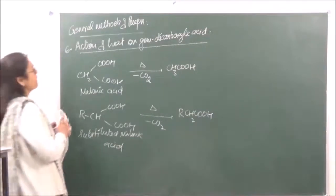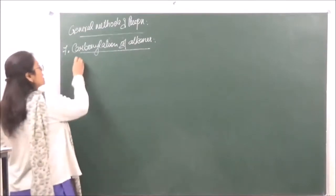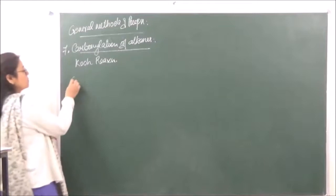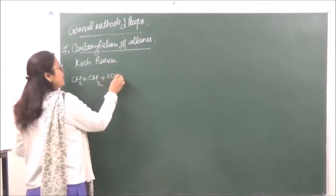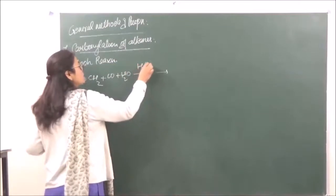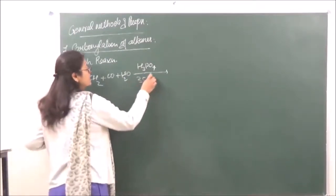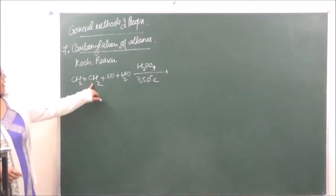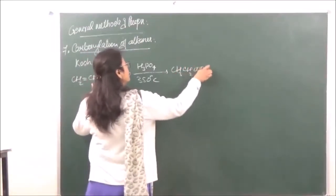The seventh method is carbonylation of alkenes, also known as the Koch reaction. An alkene is reacted with carbon monoxide and water in the presence of H₃PO₄ at approximately 350°C under pressure. The product is a carboxylic acid with a higher number of carbon atoms than the alkene. For example, ethylene gives CH₃CH₂COOH (propionic acid).